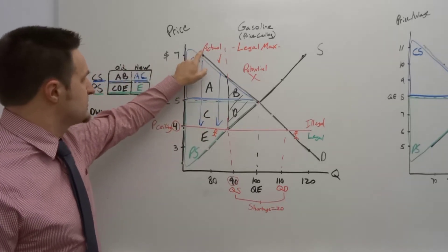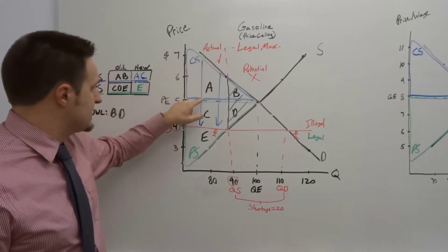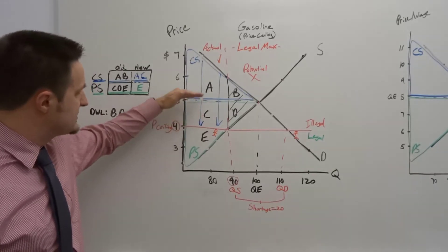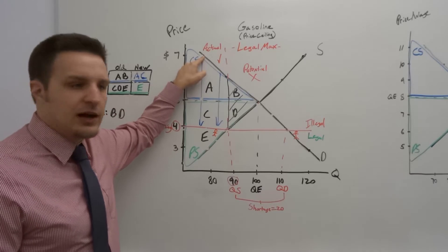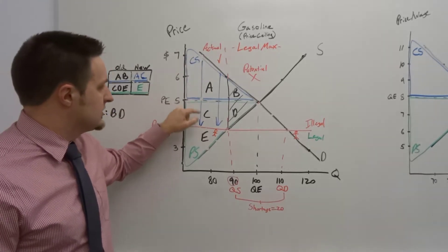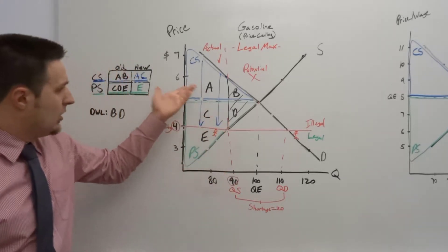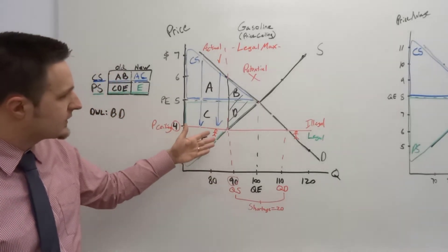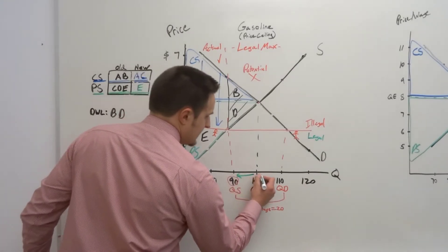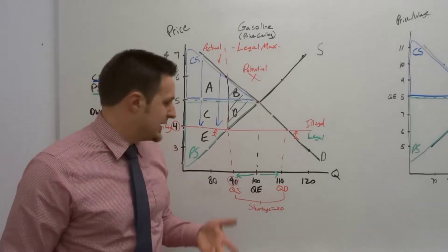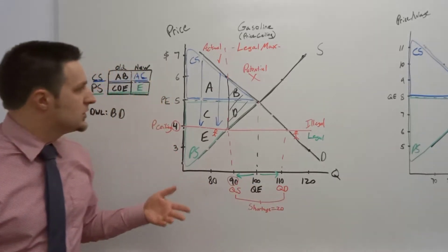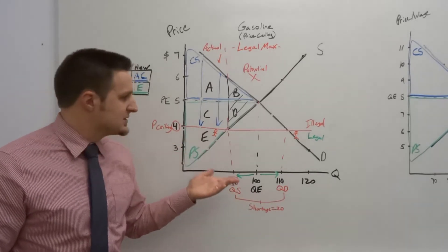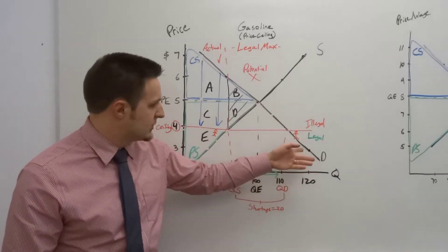On the flip side, a consumer willing to pay up to $7 for gas only had to pay $5, giving a $2 consumer surplus. Now, because the price has been artificially lowered to $4, that consumer has a $3 consumer surplus — a $1 increase. Consumers are getting lower prices, but it's at the expense of producers. And this has a distorting effect: we've decreased the quantity supplied and increased the quantity demanded, leaving 20 units unsupplied — 20 people waiting to get gas who can't. The price control distorts prices, sending a bad signal to suppliers to supply less and to consumers to buy more.